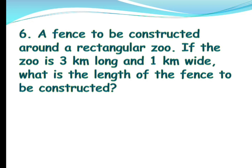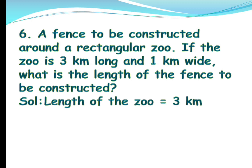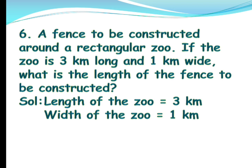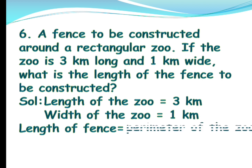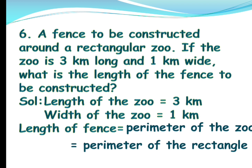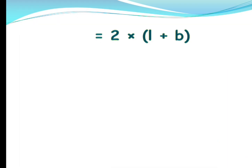Let's solve step by step. The length of the zoo is 3 kilometers and width is 1 kilometer. The length of the fence is equal to the perimeter of the zoo. This zoo is in the shape of a rectangle, so we have to find the perimeter of a rectangle. The formula for the perimeter of a rectangle is 2 into (length plus breadth).